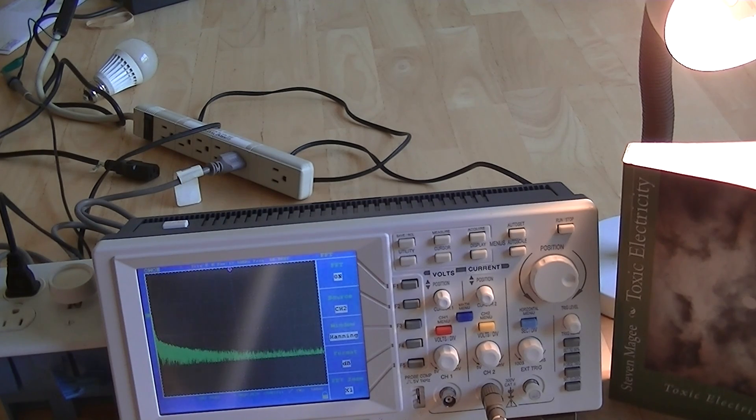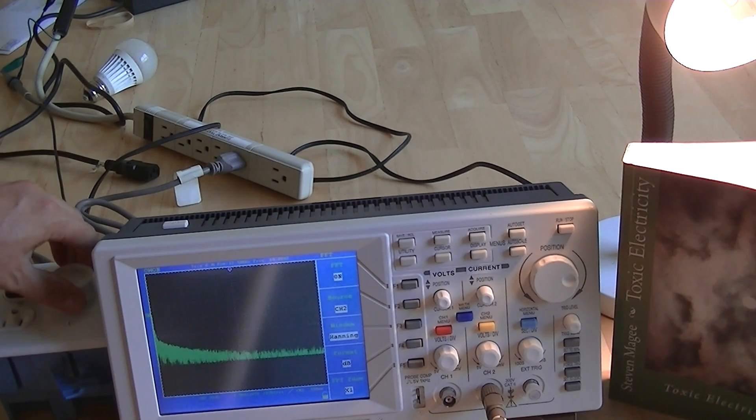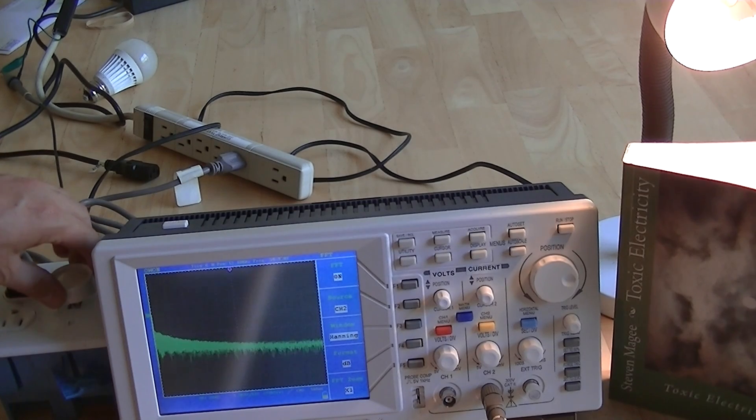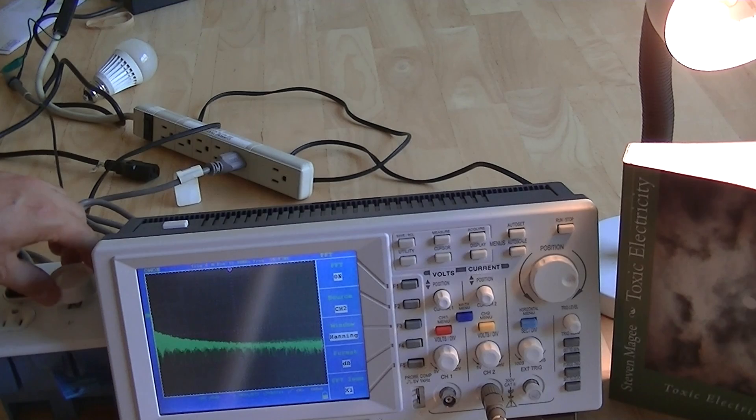So let's vary the lamp dimmer and see what we get. So you can see the harmonics vary according to the dimming setting that you have. And you can get quite extensive harmonics simply by changing the dimming setting.